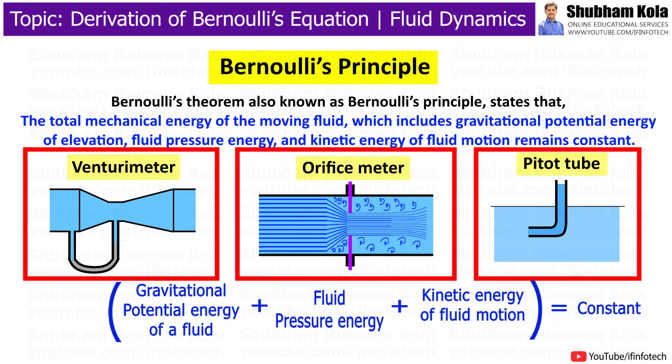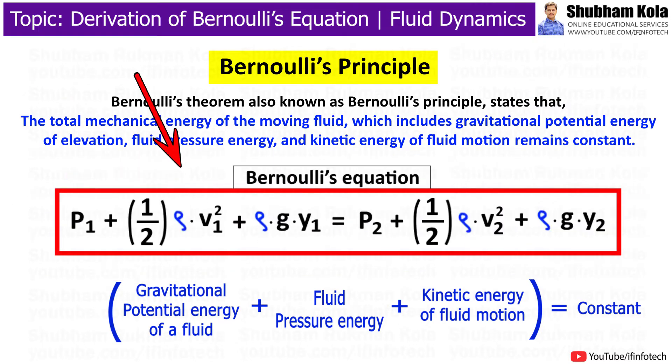The Bernoulli equation applies to various measuring devices like Venturimeter, Orifice meter, and Pitot tube. Bernoulli's equation formula is the relationship between pressure, kinetic energy, and gravitational potential energy.